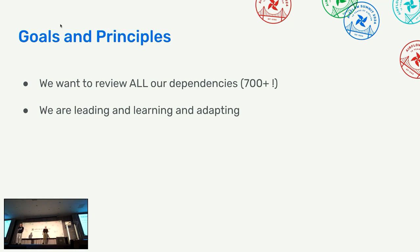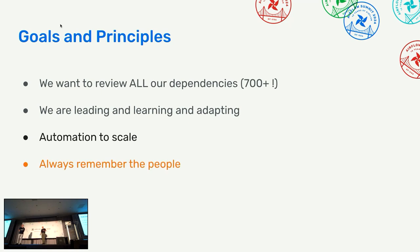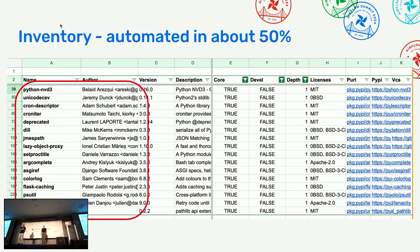Our goal is to review all 700-plus dependencies. We are learning and adapting — as Michael said, we have no idea what we're doing, so we want to learn. We want to automate to scale but always remember the people, because technology and automation is not the end solution. The interactions between people are really important — making sure security people talk to each other, teach each other. This is a chronic problem: when you show up at someone's doorstep saying 'you have a vulnerability, fix it,' you're writing checks on their bank account — their time and energy.